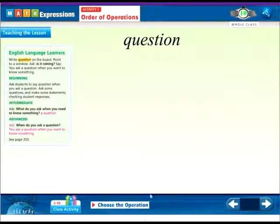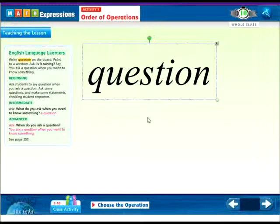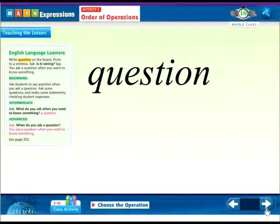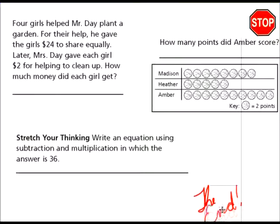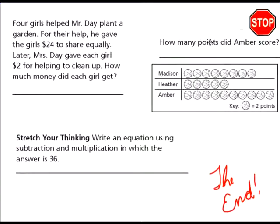Remember that a question helps us know something — we want to know the answer. When you see a question, don't get frustrated; just realize it's helping you understand. Here's the end. I've got three extra problems for you: one with Mr. Day planting a garden, one writing an equation using multiplication and subtraction where the answer is 36, and one asking how many points Amber scored. That's the end of our lesson today. Thank you and good night.